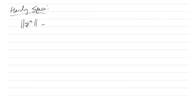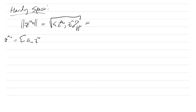How do we get these kernels? For the Hardy space, Z^n is a unit vector — its norm is 1 since the only nonzero coefficient is a_{n₀} = 1. If we take two such monomials Z^{n₀} and Z^{m₀} with n₀ ≠ m₀, we can write Z^{m₀} = sum b_n Z^n where b_n = 0 if n ≠ m₀ and b_{m₀} = 1. Their inner product is zero, so they are orthogonal.